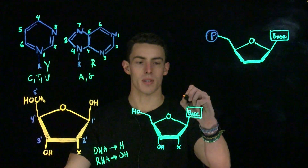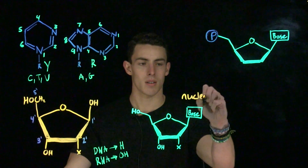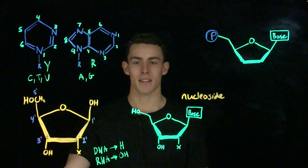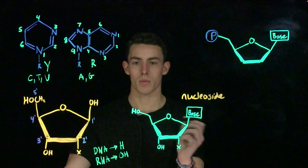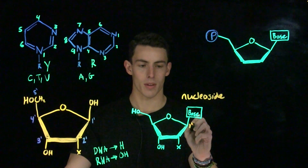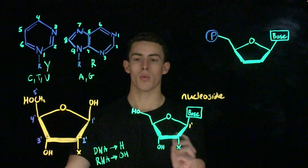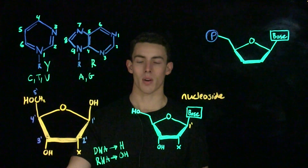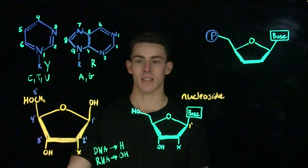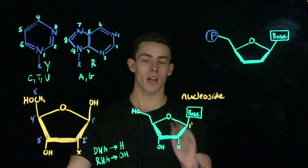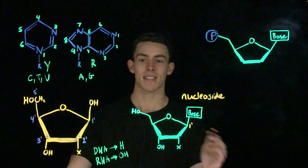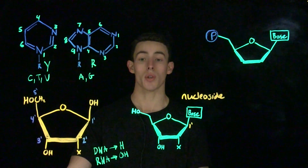This structure is called a nucleoside. A nucleoside contains a ribosugar — deoxy or regular — with a base attached to the one-prime carbon. While individual bases are called adenine, guanine, cytosine, thymine, or uracil, in a nucleoside we call them adenosine, guanosine, cytidine, thymidine, or uridine.